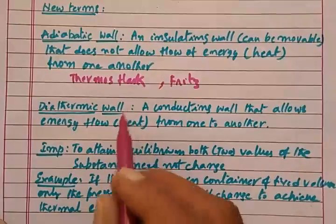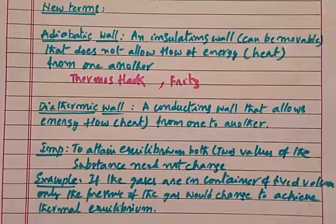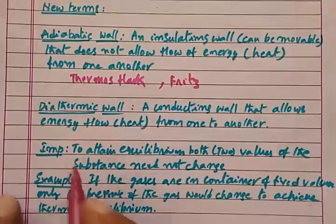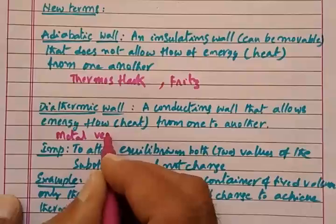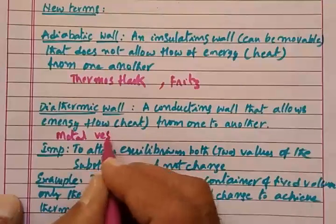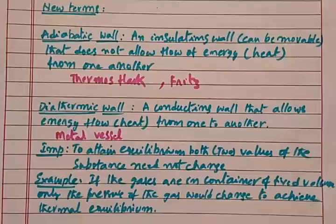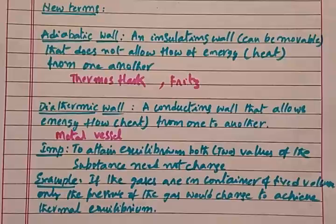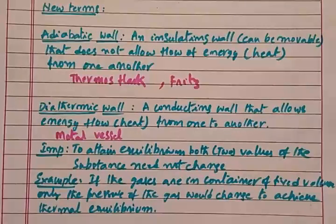The second term is diathermic wall — a conducting wall that allows heat energy to flow from one side to the other, in both directions. The metallic walls of common containers are examples of diathermic walls. These two types of walls — adiabatic and diathermic — are important to understand for the experiment we will see next.